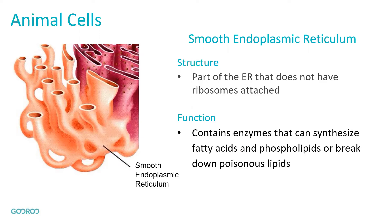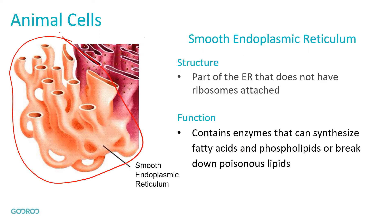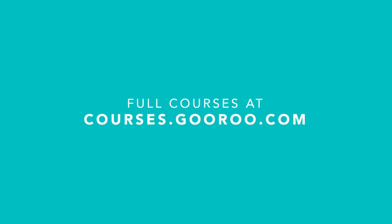Looking at the picture on the left, we can see that all this lighter-colored organelle is the smooth endoplasmic reticulum, because it doesn't have any ribosomes on the outside. Looking at the darker pink up here, that is part of the rough endoplasmic reticulum, and you can see that it has a lot of ribosomes attached to it.